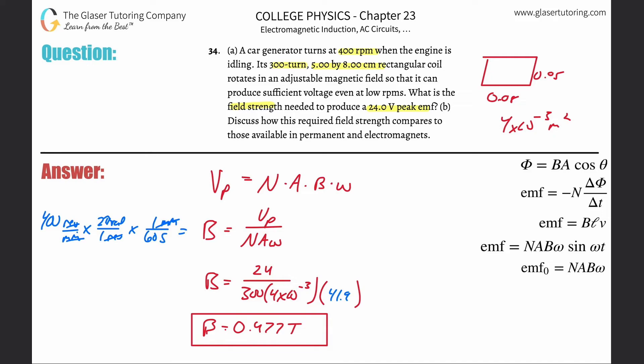Letter B says discuss how this required field strength compares to those available. It's piddling. You go into an MRI machine, you're going to experience 5 Tesla. So this is about 10 times less or so.